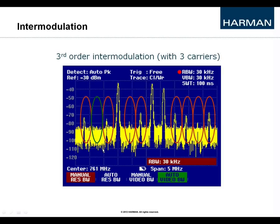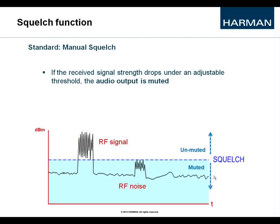The only spot where a fourth carrier frequency could be placed would be the area marked in green. You can imagine what the spectrum would look like with 16 or more channels working at the same time — it gets quite complicated. That is why it is very much suggested to only use calculated frequencies for your wireless channels.